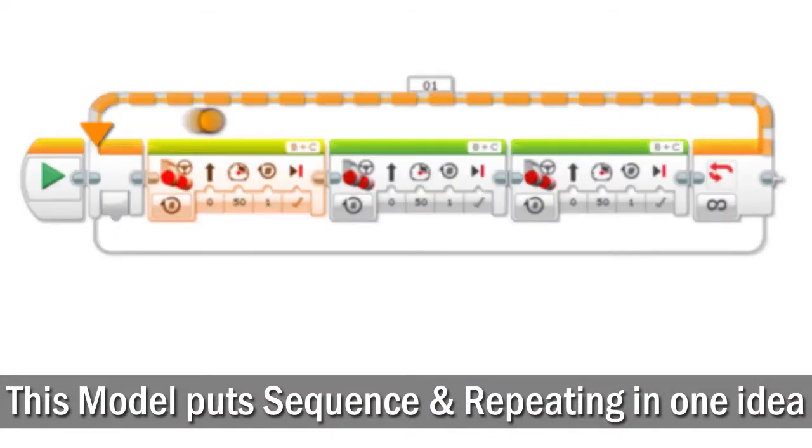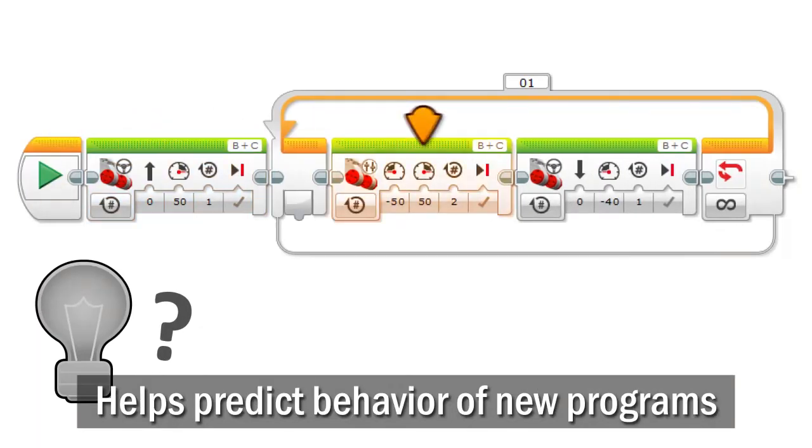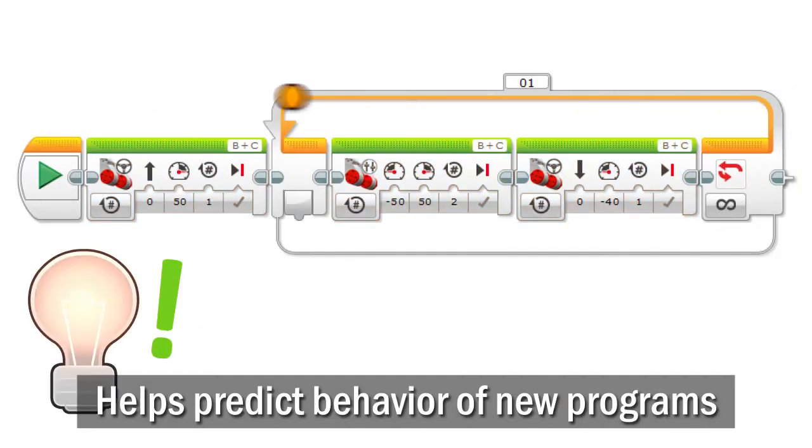This model explains sequence and repeating in a single idea, which helps everything make more sense. It also lets you better predict what a new program will do, since you know how it will behave as a system.